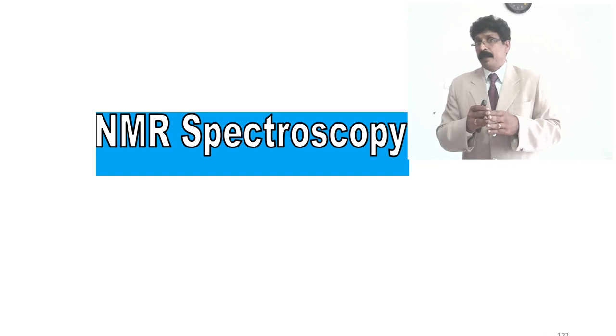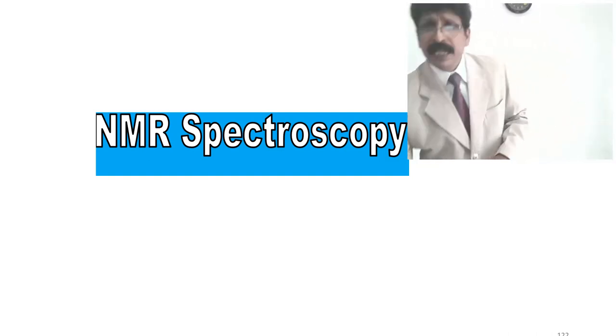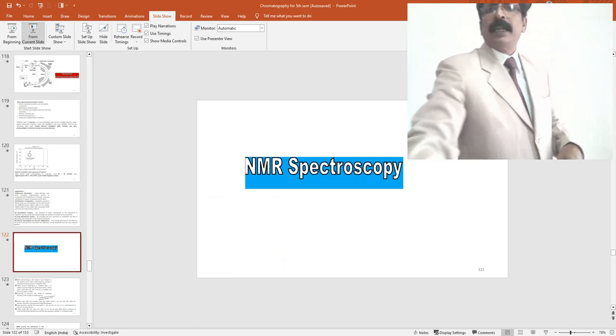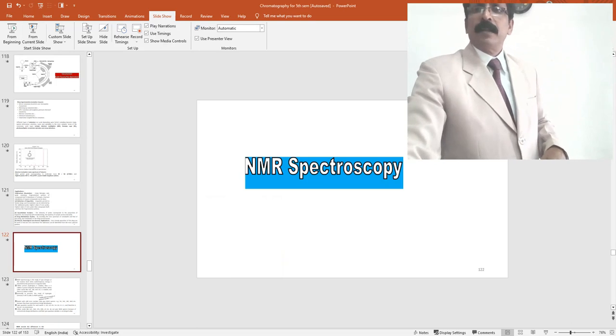In the next class, we will discuss NMR — nuclear magnetic resonance spectroscopy — as the next instrumental method applied for phytochemistry investigation and characterization of isolated compounds. I have kept it short so that listening and understanding is easier for students. Thank you.